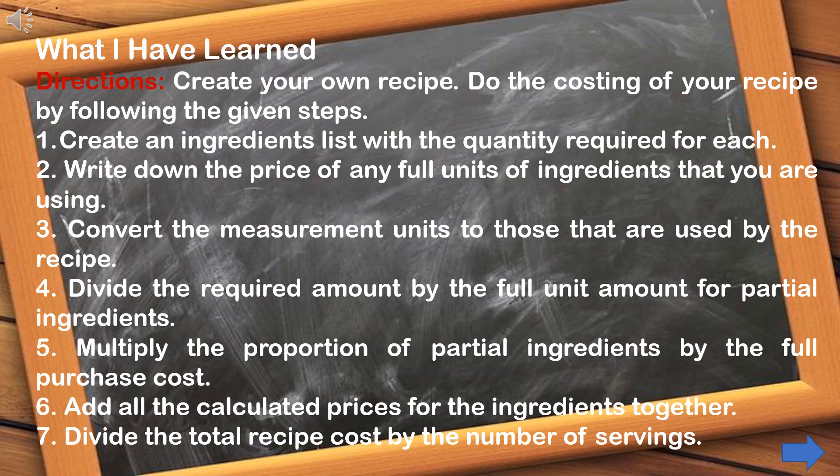On the 'What I Have Learned' part: create your own recipe and do the costing by following the given steps — 1. Create an ingredients list with the quantity required for each. 2. Write down the price of any full units. 3. Convert measurement units to those used by the recipe. 4. Divide the required amount by the full unit amount for partial ingredients. 5. Multiply the proportion of partial ingredients by the full purchase cost. 6. Add all calculated prices together. 7. Divide the total recipe cost by the number of servings.